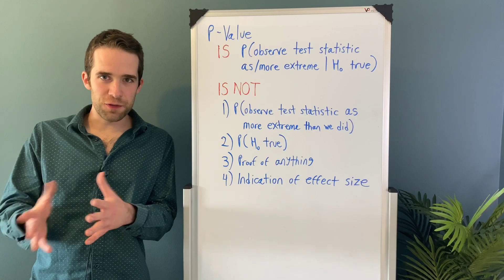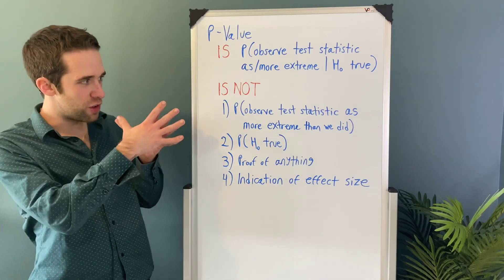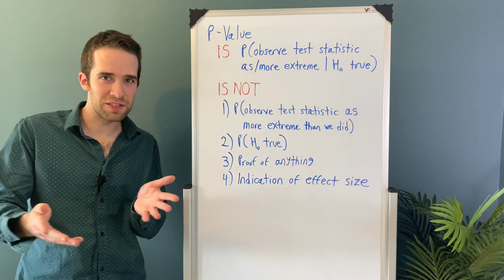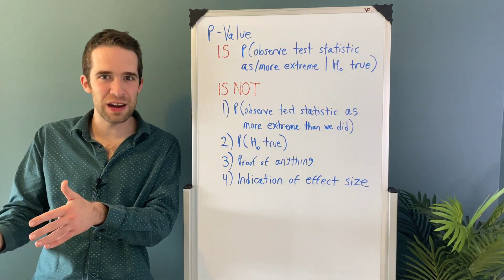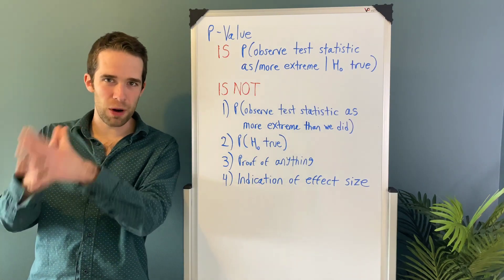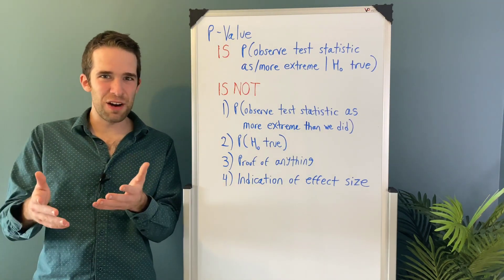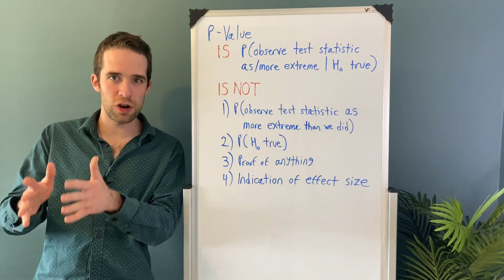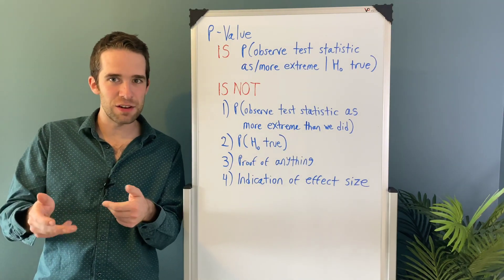Let's start with this first misconception about p-values, which is that p-values are the probability we observe a test statistic as extreme or more extreme than we did. We're on the right track, but we forget about the whole part about the null hypothesis being true. This is a fairly common thing that people who are just learning statistics for the first time can tend to forget.